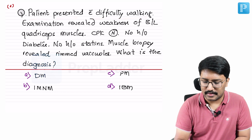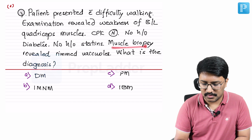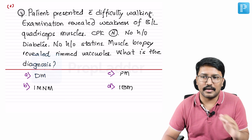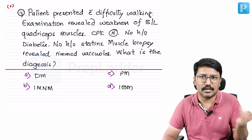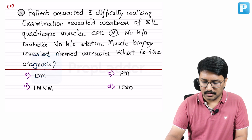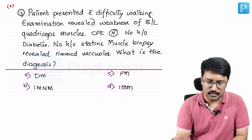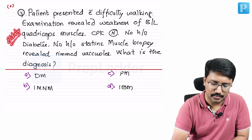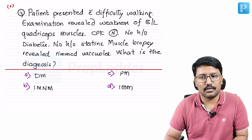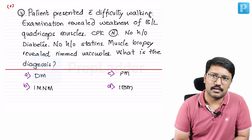Next question: patient presented with difficulty walking, bilateral quadriceps weakness, CPK normal, no history of diabetes, no history of statins. Muscle biopsy revealed rimmed vacuoles. Bilateral quadriceps weakness brings two things to mind: inclusion body myositis and diabetic amyotrophy (Bruns-Garland syndrome). Since there is no history of diabetes, I would strongly think of inclusion body myositis — especially if the patient is elderly, which is typical for IBM.